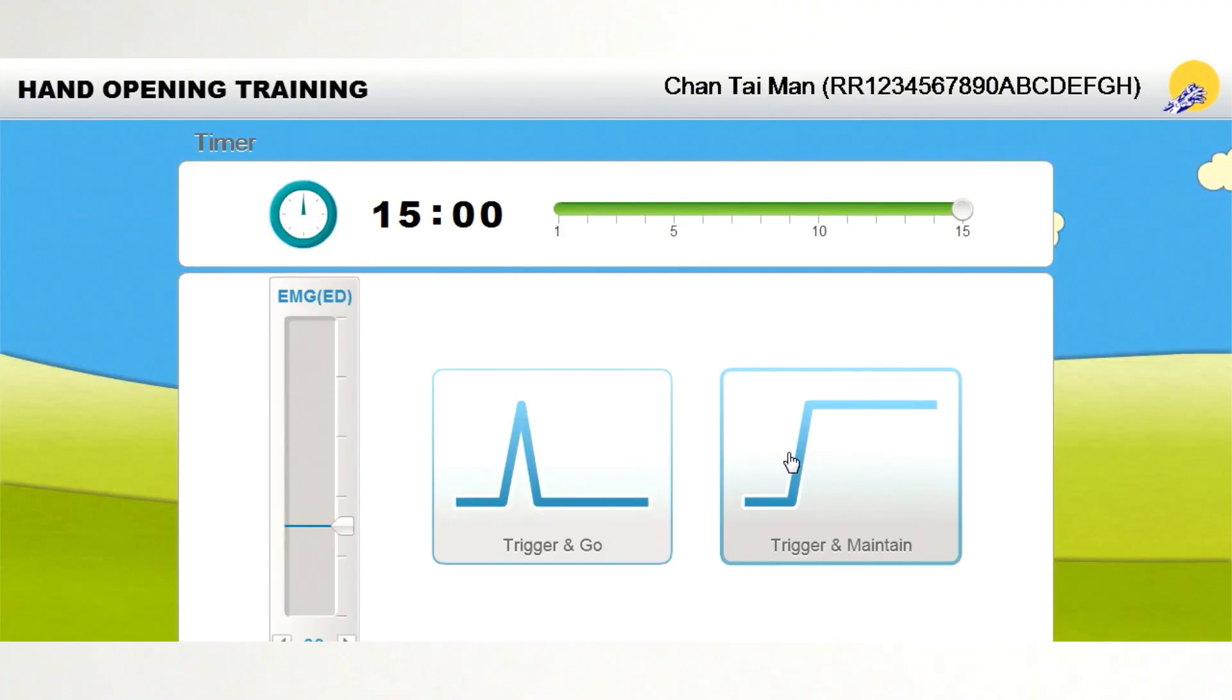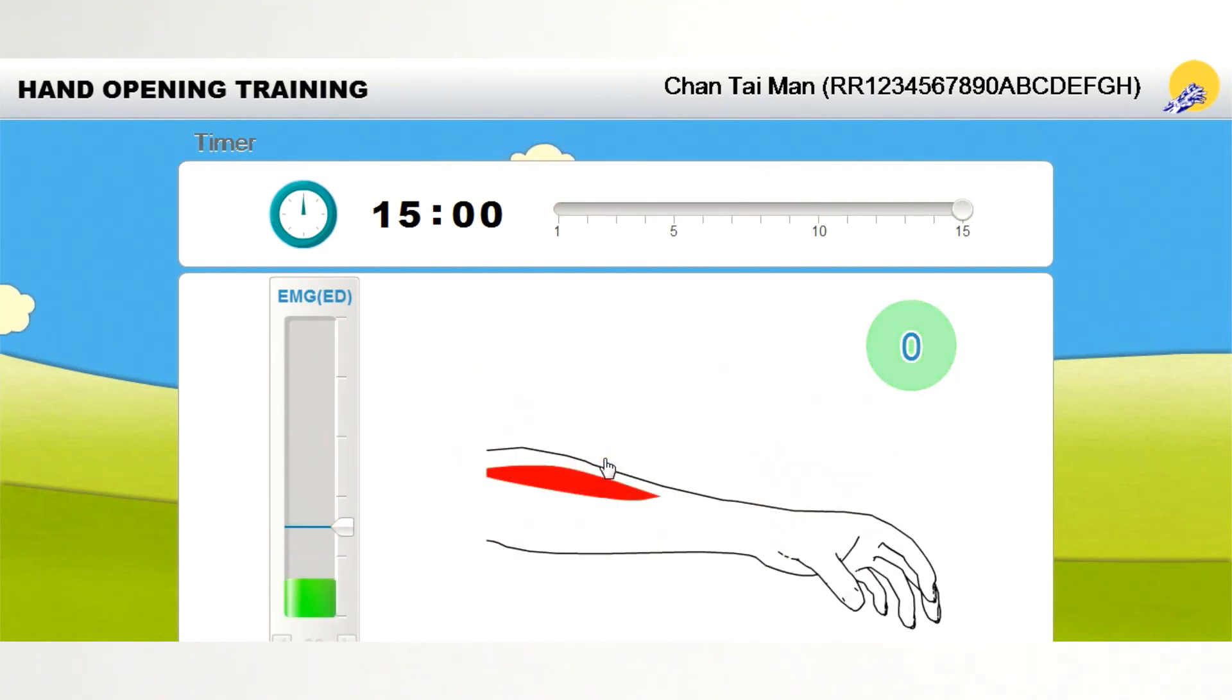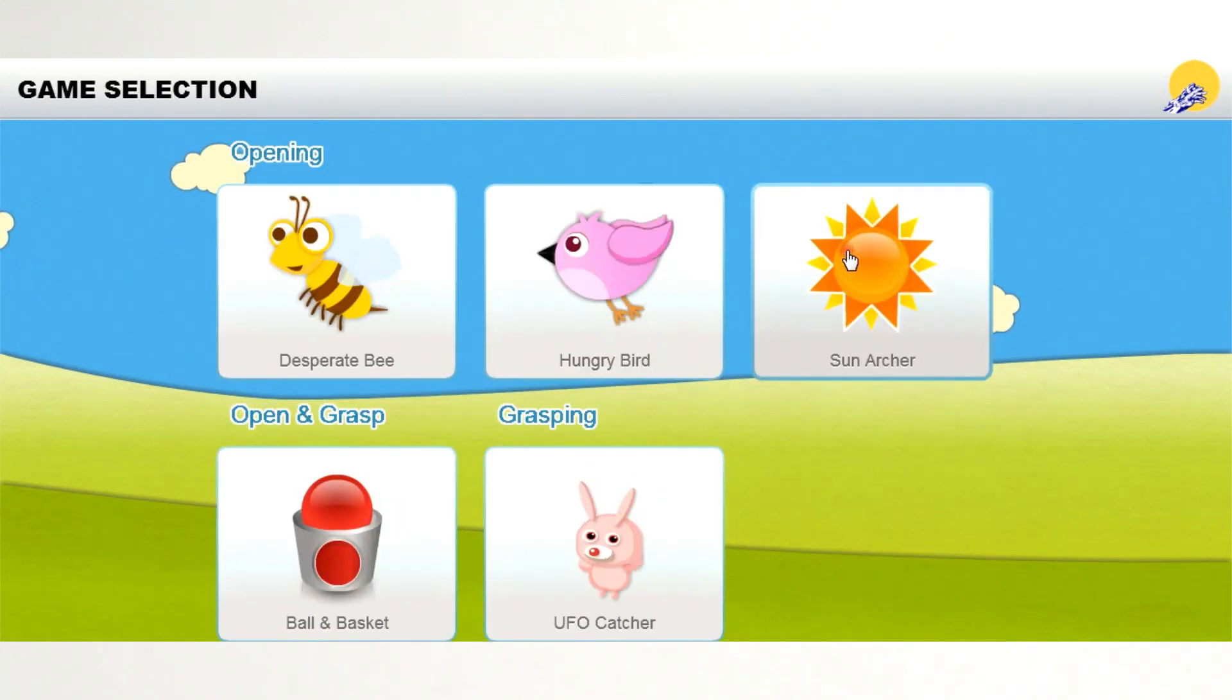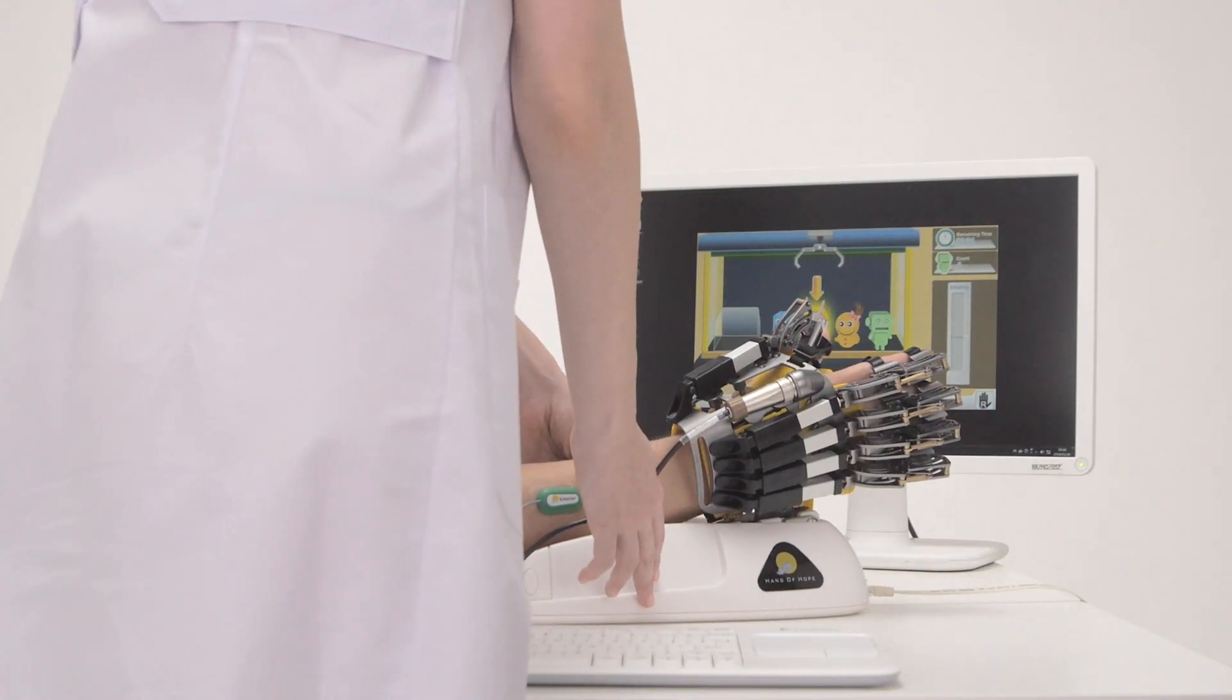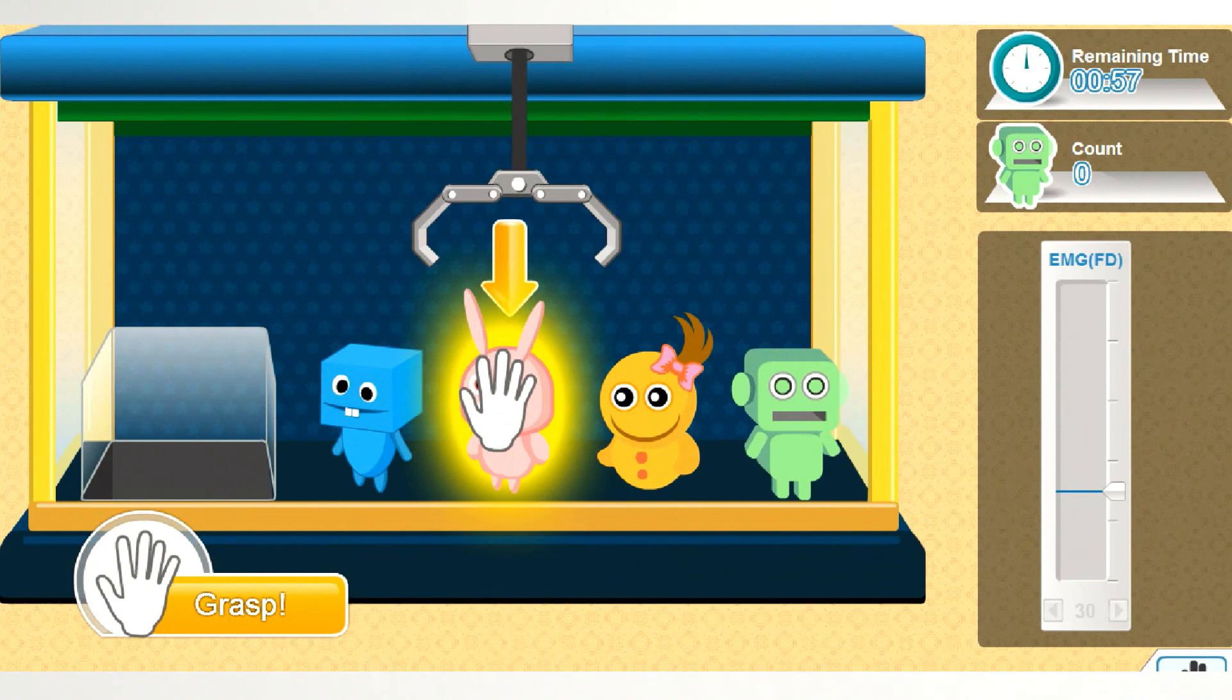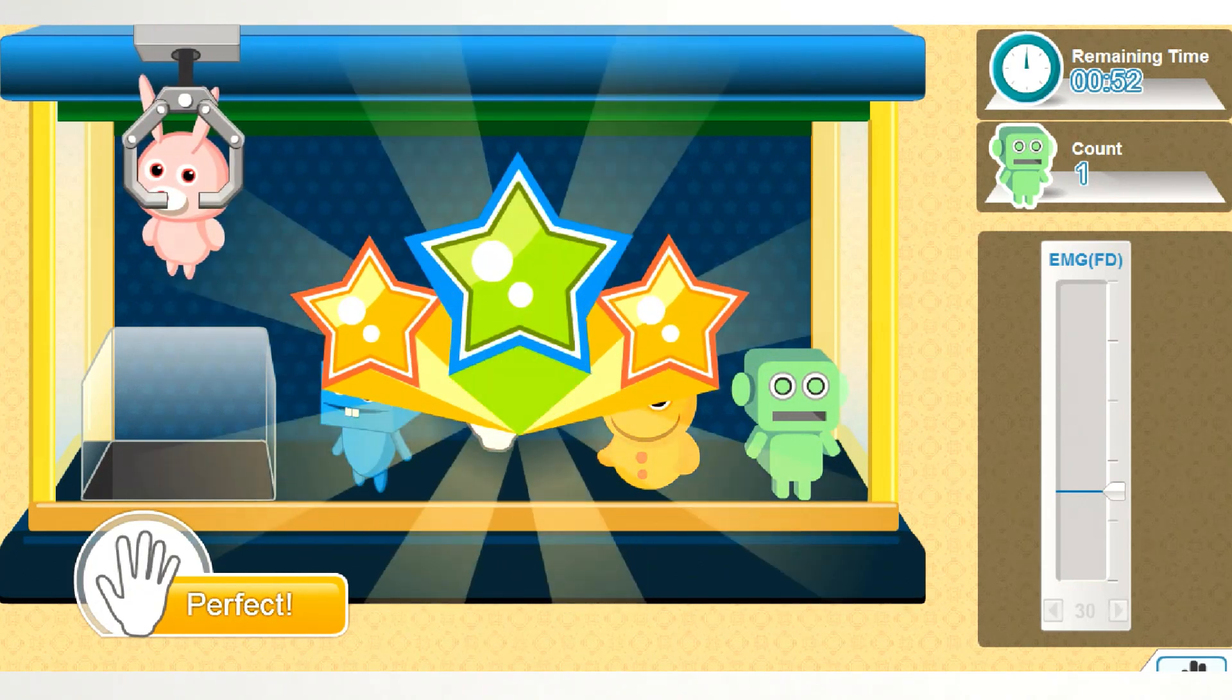Hand of Hope has passive and active training modes for hand opening and grasping. Five different games with four difficulty levels help the patient make the rehabilitation process more interesting and fun with audio and visual stimulation.